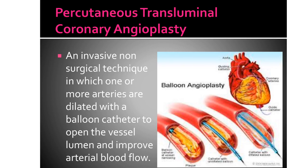How PTCA is performed: the balloon-tip catheter is positioned in the artery, then the inflated balloon is inserted at the site of obstruction. When the balloon is inflated, the client should feel chest pain — this is normal. Once the plaques are flattened, the balloon is removed. This achieves arterial dilation by means of the balloon.